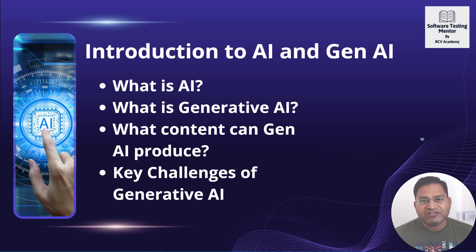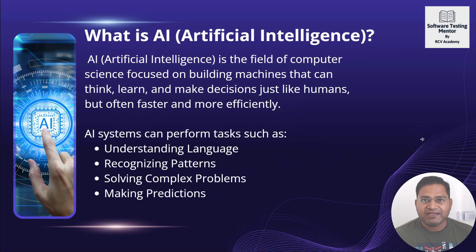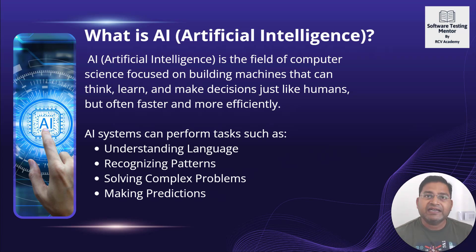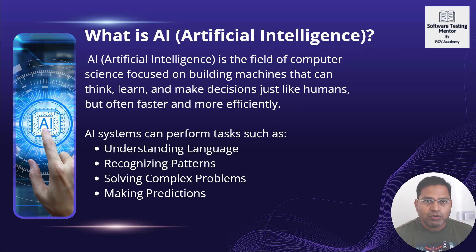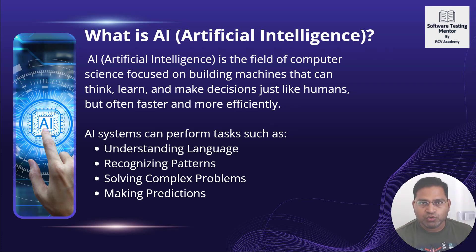Before we understand generative AI, we first need to understand what exactly AI or artificial intelligence is. AI is the field of computer science which focuses on building machines that can think, learn, and make decisions just like humans, but often faster and more efficiently. When machines can process data and take decisions based on prior learning, just as human beings do.